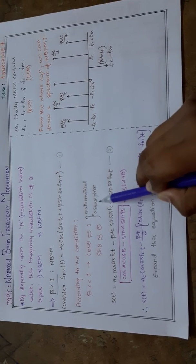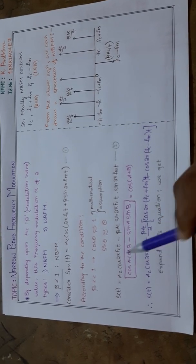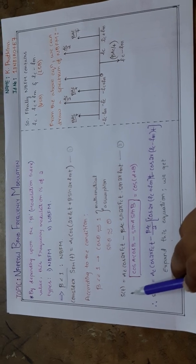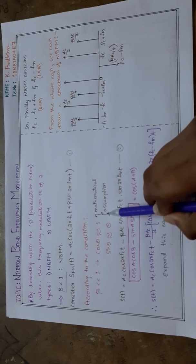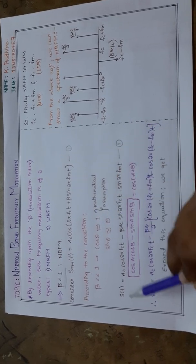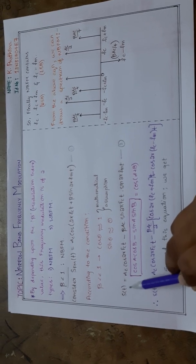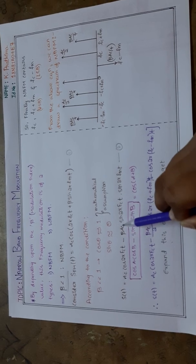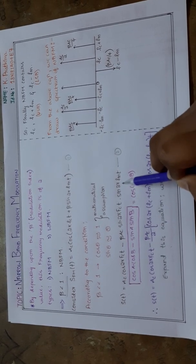We have to assume them for solving this equation. If we substitute these cos θ and sin θ approximations in equation 1, we get equation 2: S(t) = A_C cos(2π f_C t) - β A_C sin(2π f_C t) sin(2π f_M t).